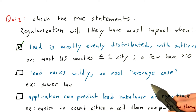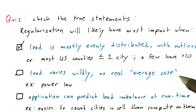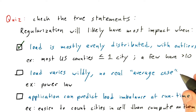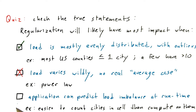On the other hand, when the load varies wildly and it's not really easy to predict what the average case is — you have no idea when you start a process how long it's going to take or how many items you'll have to process — then I would say this is not an easy case for regularization.